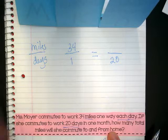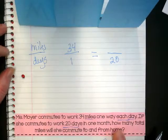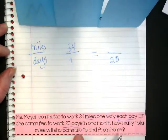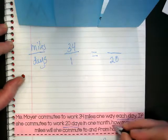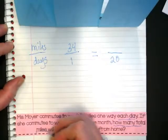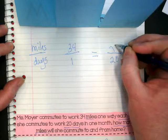The question is going to tell us where to put our variable. How many total miles will she commute to and from home? There's our question. How many total miles? That means we put our variable there.